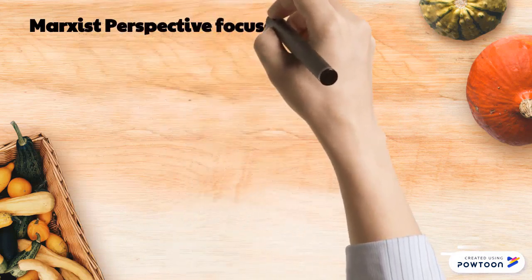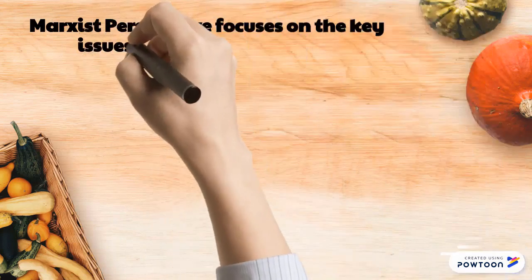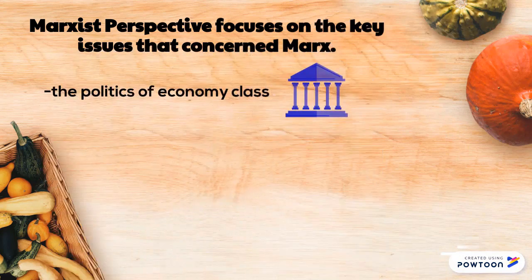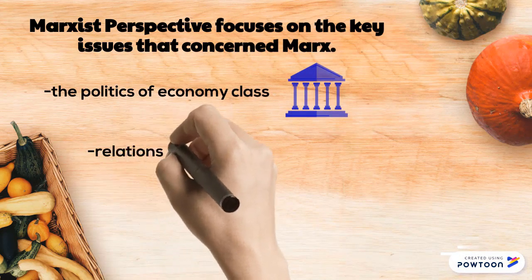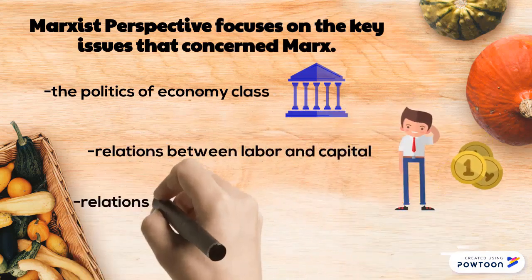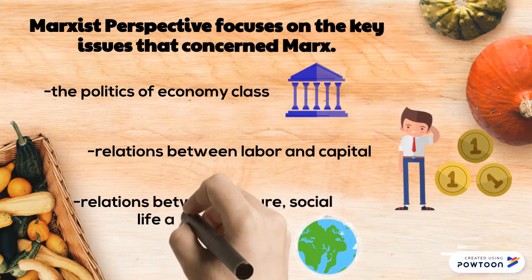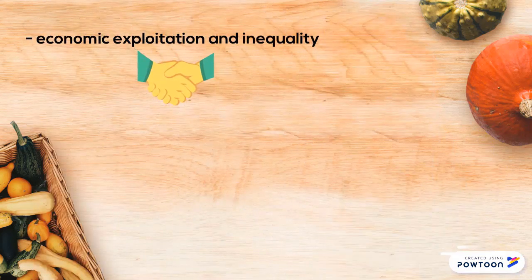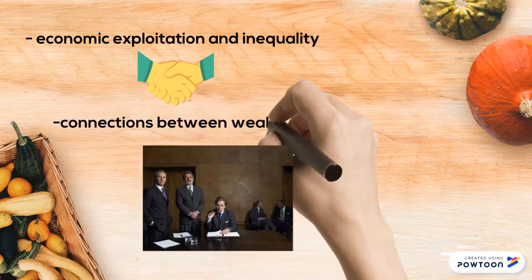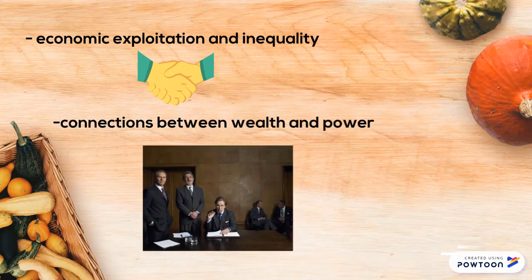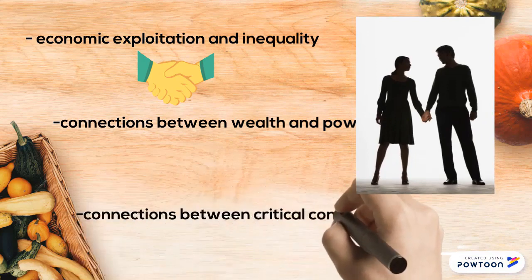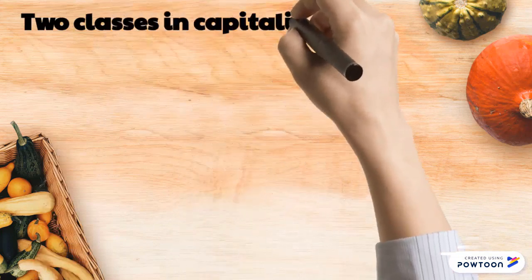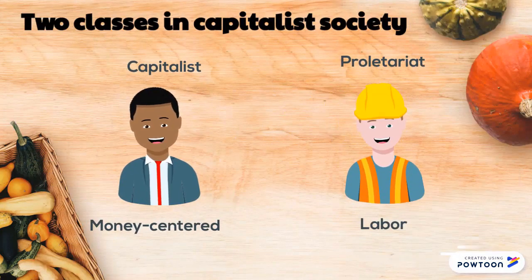The Marxist perspective focuses on key issues that concerned Marx: first, the politics of economic class; relations between labor and capital; relations between culture, social life, and the economy; economic exploitation and inequality; the connections between wealth and power; and the connections between critical consciousness and progressive social change.